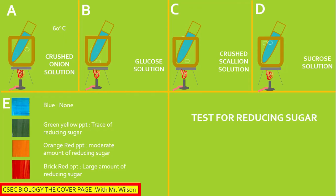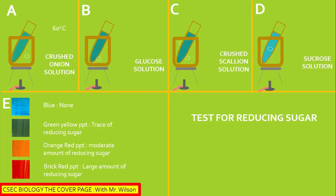We can turn off the flame now. To the bottom left of the screen you would observe blue — the blue suggests that there is no reducing sugar evident. Green, yellow-green, or dark green, as you are seeing on the screen now, indicates a trace of reducing sugar.